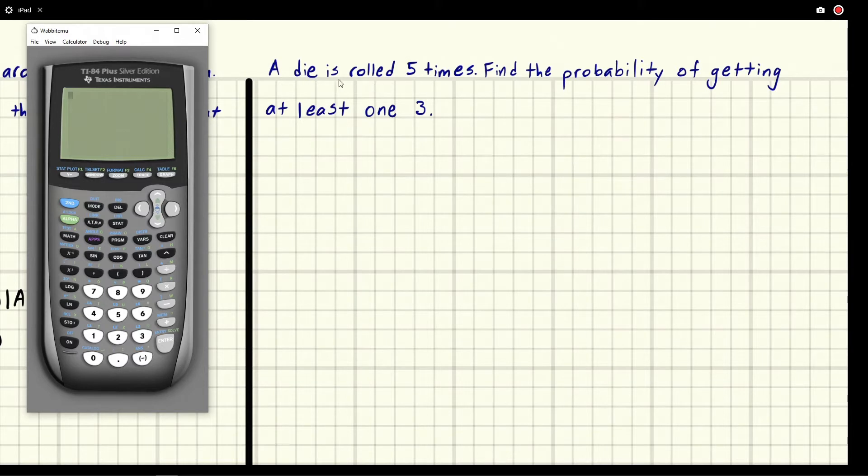So we say okay, we need at least one. At least one, its complement is none. So what are the chances we don't get any threes? If we take that off of 100%, one minus the probability of none is equal to the probability of at least one, right? This is just using the complement.